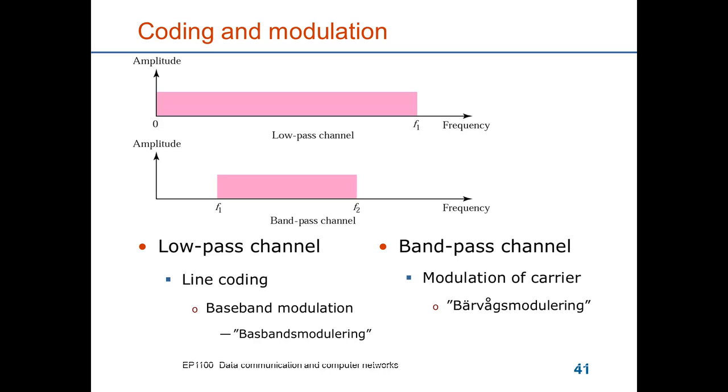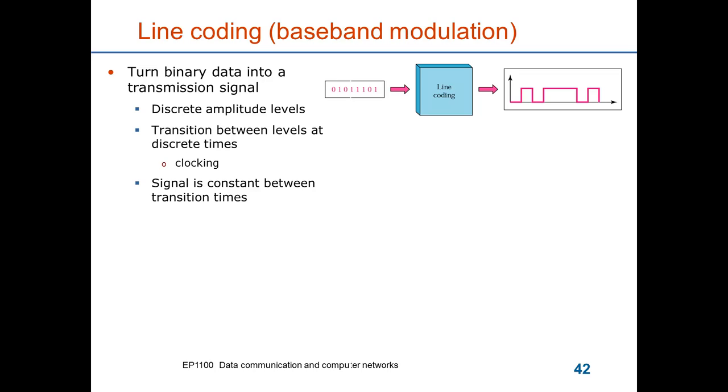The line coding of baseband modulation is used to turn data into a transmission signal. It uses discrete amplitude levels, and the transitions between the levels occur at discrete times. So it's a clocking where each clock interval corresponds to one or a fixed number of bits. The signal is constant between these transmission times, as shown in the figure up to the right.